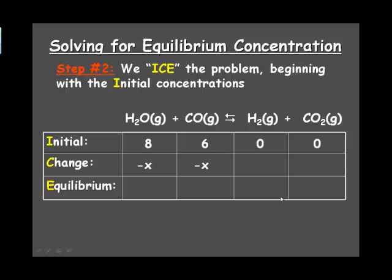So our change for water is minus X, for CO is minus X, for H2 it's going to go up by X, and for CO2 it's going to be an increase of plus X. Now if there were coefficients in there, in that balanced equation, those would be reflected in the change. So for example, if we had a 2 in front of H2, then the increase, the change there would be a plus 2X. So the changes are all proportionally stoichiometrically.